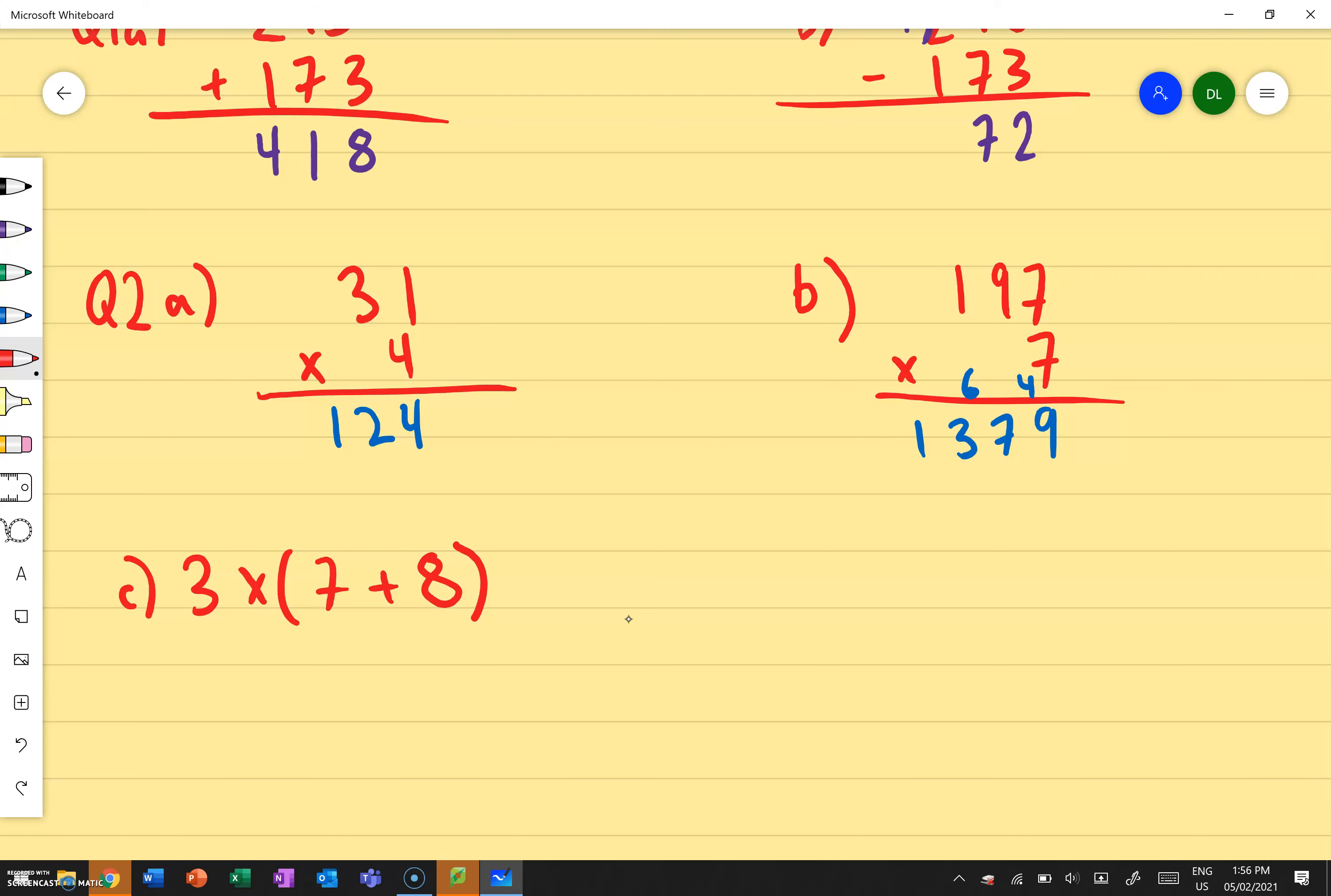Now what does BIDMAS stand for? What's the first thing in BIDMAS? Brackets. Perfect, I have to do the brackets first. That's what the B stands for, brackets. So if you're using that method, we can say I've got 7 plus 8. What's 7 plus 8? 15. Equals to 15. But I've still got this 3 times at the start, so I can do 3 times 15. What does that give me? 45. 3 times 15 is 45.